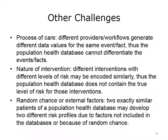Process of care refers to the fact that different providers or clinical workflows generate different data values for the same event or fact. Thus, the same fact or event might show up differently in the same population health database. Nature of intervention suggests that different interventions with different levels of risk may be encoded similarly. Thus, the population health database does not contain the true level of risk for those interventions. Random chance or external factors indicates that two exactly similar patients of a population health database may develop two different risk profiles due to factors not included in the databases or simply because of random chance.